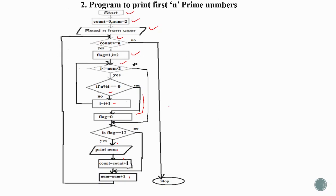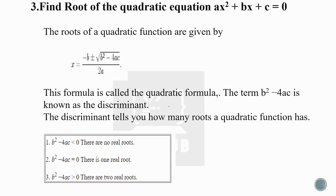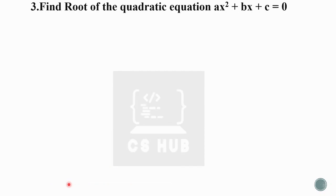This is the flowchart algorithm. It is important for generating prime numbers. The next question is: find the root of the quadratic equation ax² + bx + c = 0. The formula is: minus b plus or minus root of b² minus 4ac, all divided by 2a. The key part is the discriminant. If b²-4ac is less than 0, there are no real roots — only complex or imaginary roots.